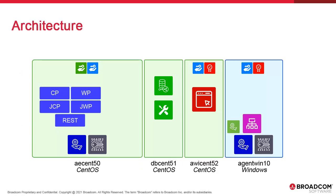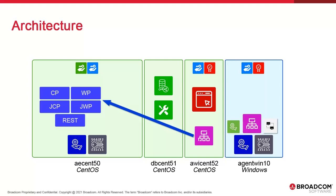In the architecture diagram, we're installing an agent on the AWI host. The agent communicates with the AE server using connection settings in the INI file and requires the TLS certificate. We're also installing the TLS Gateway on the Windows host.